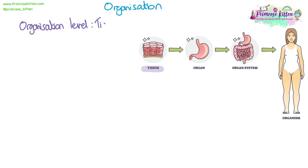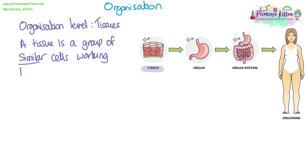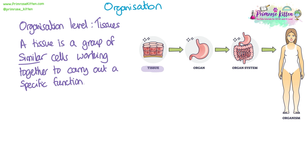The next level up in organisation is tissue. The definition of tissue hasn't changed since GCSE — a tissue is a group of similar cells working together to form a specific function. The word 'similar' is important here because it's a way of identifying cells as being in the same tissue; they look similar to each other and normally have the same properties and the same adaptations. These are those specialised cells coming together to form a tissue in order to carry out a specific function.